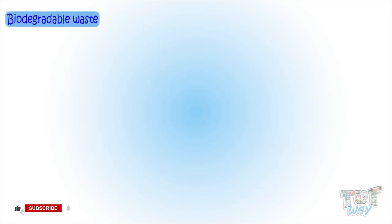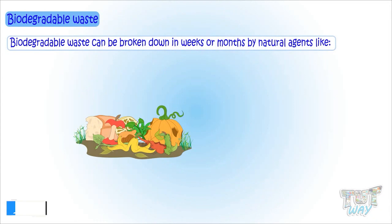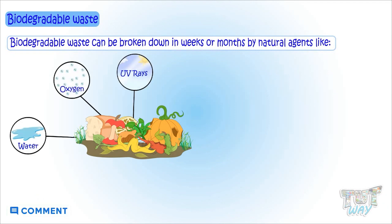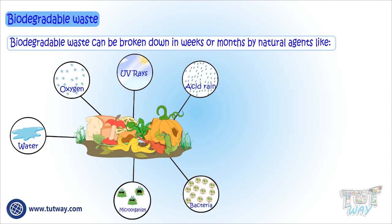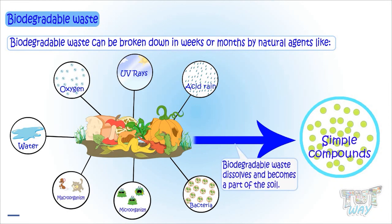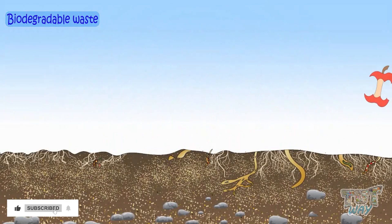What is biodegradable waste? The waste material that can be broken down in weeks or months by natural agents like water, oxygen, UV rays of the Sun, acid rains, bacteria, and other micro and macro organisms into very simple compounds — that is, they dissolve and ultimately become part of the soil — are known as biodegradable waste.